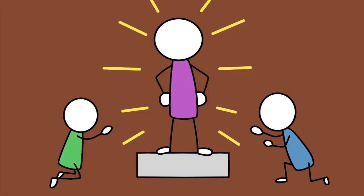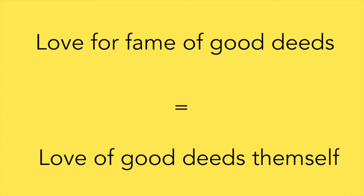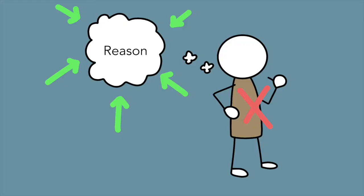And finally, Hume addresses the criticism that those who do virtuous actions love to be praised. Hume believes that a love for the fame of good deeds is actually pretty similar to the love of the good deed itself. Therefore, it's not so much the fame that should alert us, but what the fame is for.